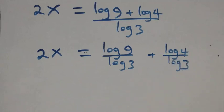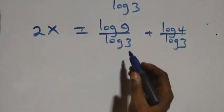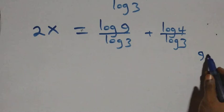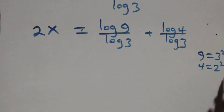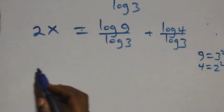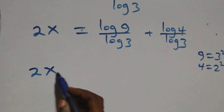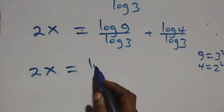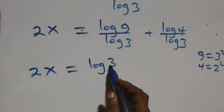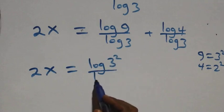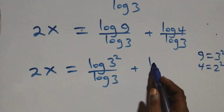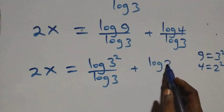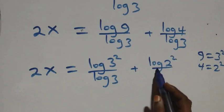From here, we can express 9 as 3 times 3, which is 3 squared, and also 4 as 2 times 2, which is 2 squared. So what we have becomes 2x equals log 3 squared over log 3, plus log 2 squared over log 3.